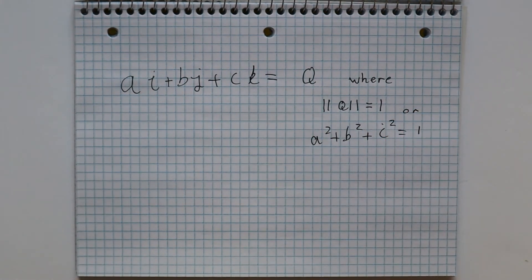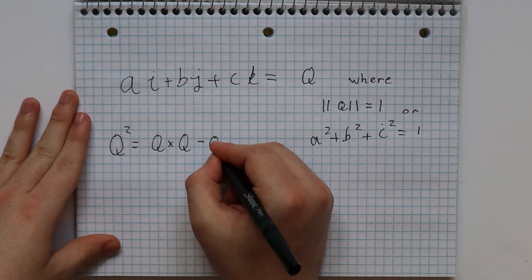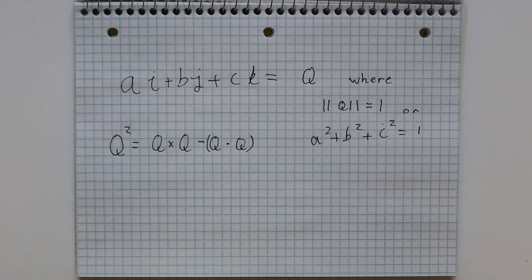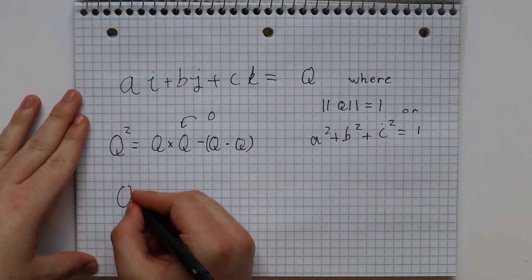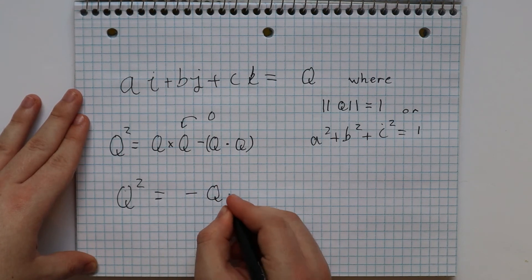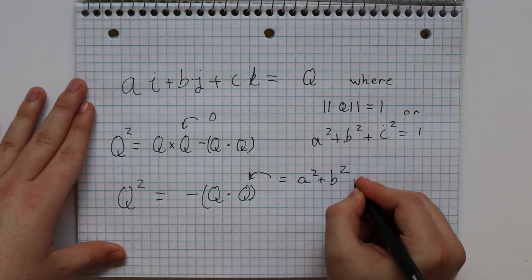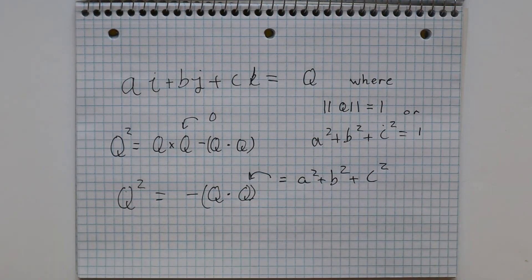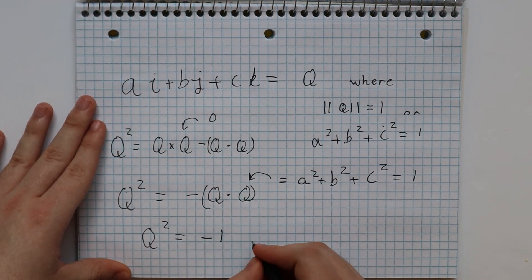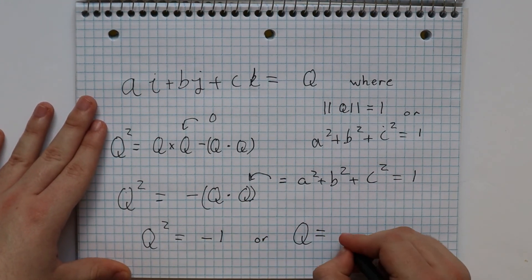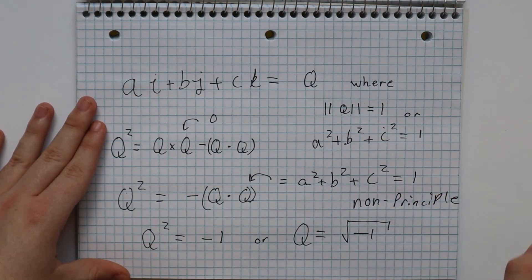So using the fact we just derived, we can get that q squared equals q cross q minus q dot q. Now the cross product of any vector with itself is always 0. And so we get that q squared equals negative q dot q. And this q dot q can be expanded to a squared plus b squared plus c squared. Now as we said, if this is a unit quaternion, this equals 1. Then q squared equals negative 1. Much easier than doing all the tedious quaternion algebra.